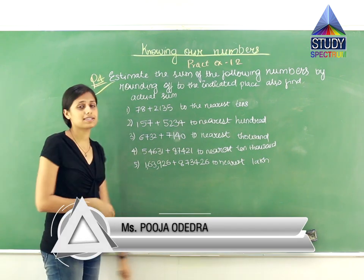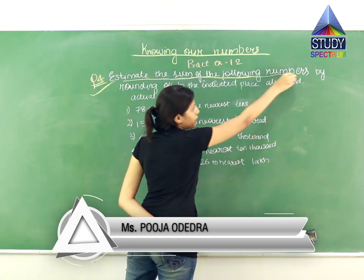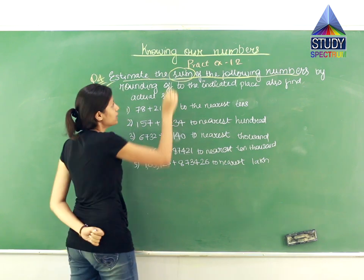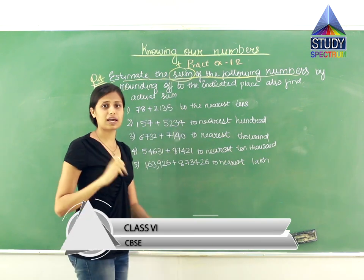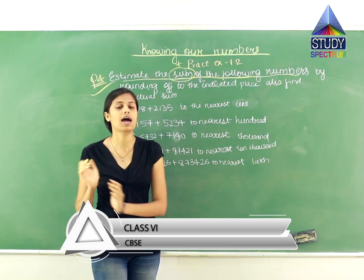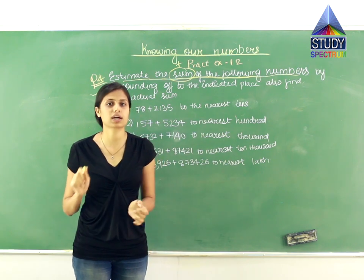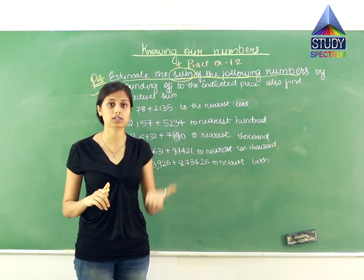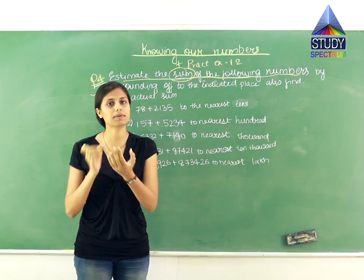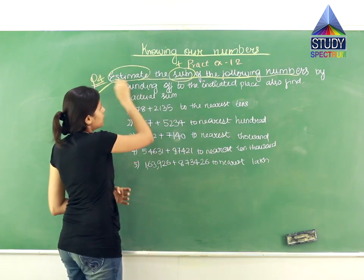Let us start with the fourth question. Estimate the sum of the following numbers. What is the meaning of sum? Sum means addition. And what is the meaning of estimation? Like rounding off or approximate number. After writing your exams, you can estimate that you will score this many marks. That is what estimation is — it is different from the actual, even if it is approximately close to the actual results.